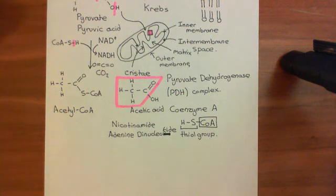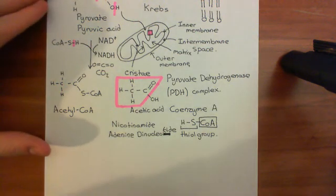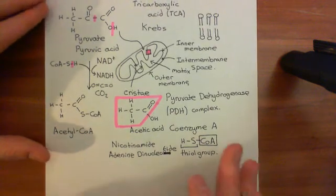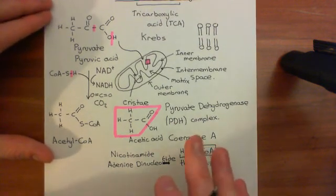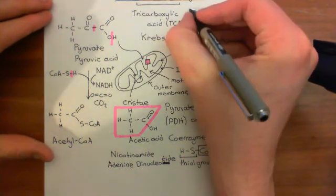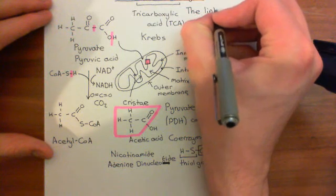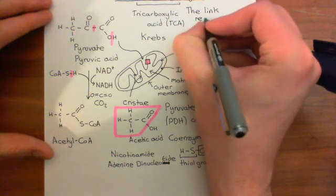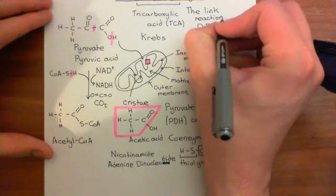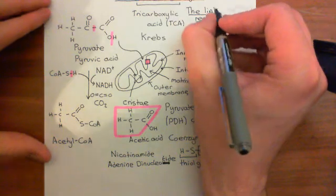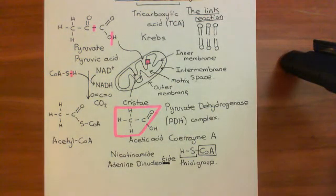This first reaction is sometimes known as the link reaction. It's usually included as part of the citric acid cycle and never as part of glycolysis, though occasionally people count it as its own separate step. It doesn't actually fit into the cycle itself, which is why it's sometimes considered separately.